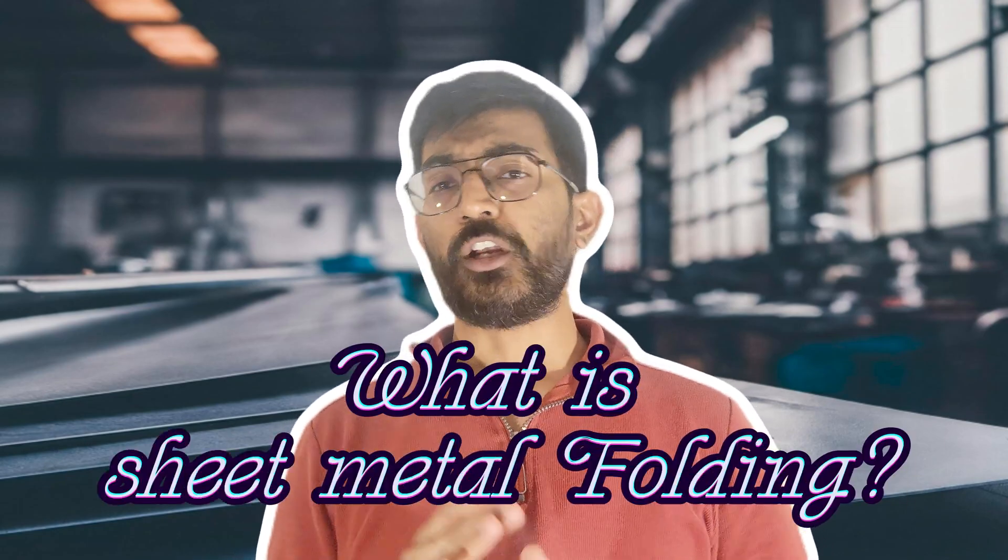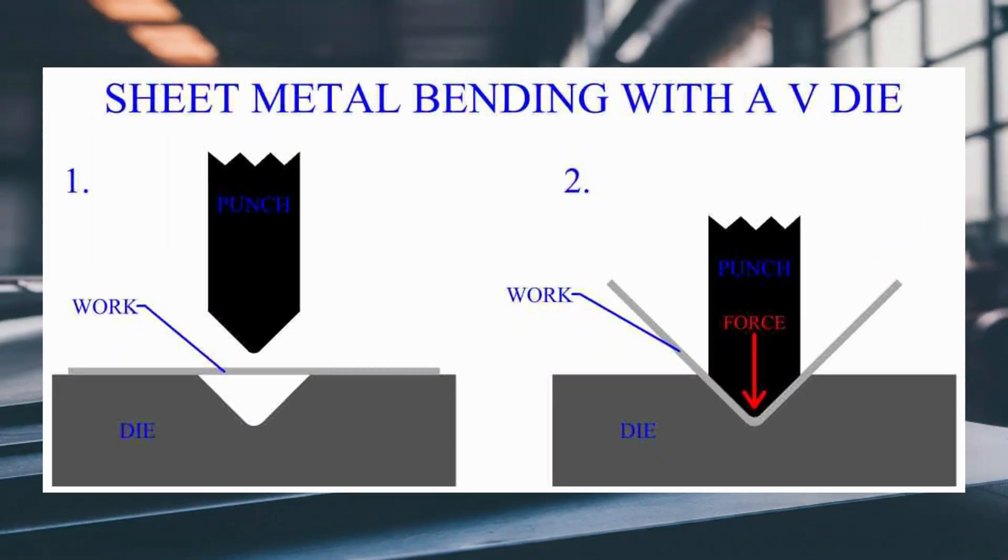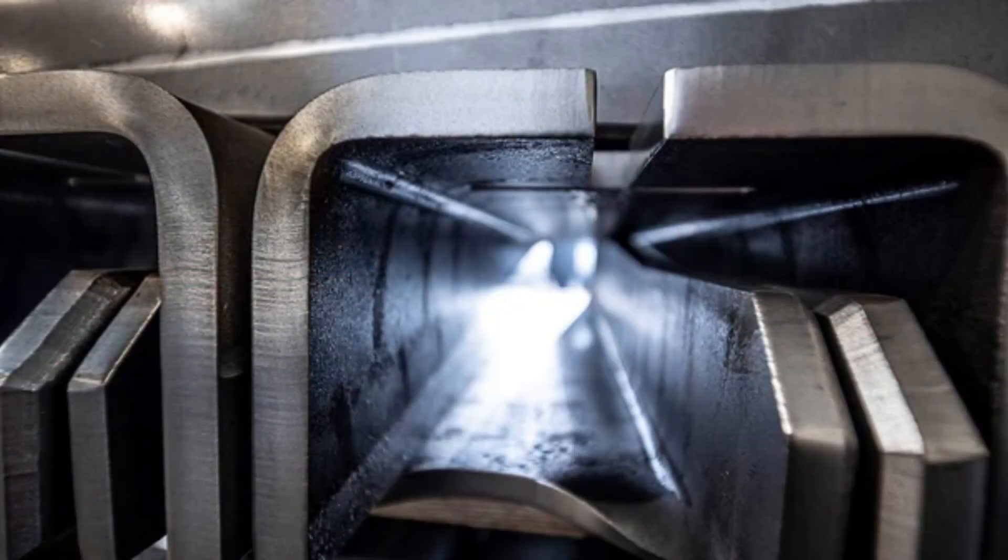Sheet metal folding is a stage in sheet metal fabrication process — a very important stage where we use force or pressure to bend or deform a metal to get the desired shape. It is the second step out of four steps of sheet metal fabrication, just after sheet metal cutting. Sheet metal folding involves bending a sheet metal to a desired shape so that you can utilize it for further fabrication. The term folding can also be used as sheet metal bending or forming in the sheet metal fabrication industry.